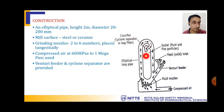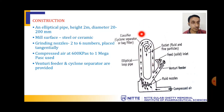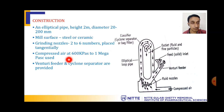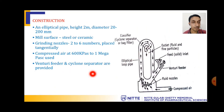There is a screen at the outlet that allows only fine particles through. This elliptical circulation of particles causes the size reduction to happen. Compressed air at 600 kilopascals up to 1 megapascal is used. A venturi feeder controls particle input, and the outlet is connected to a cyclone separator for separating finer particles.